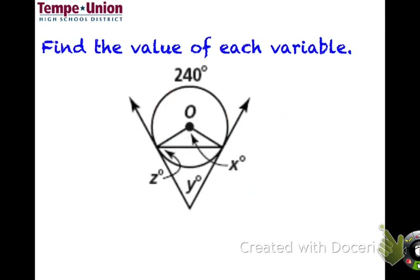Final example: the whole circle is 360 degrees, so 360 − 240 = 120 degrees for the remaining arc. x is the central angle, and the central angle equals its intercepted arc, so x = 120 degrees.